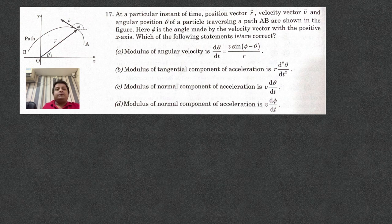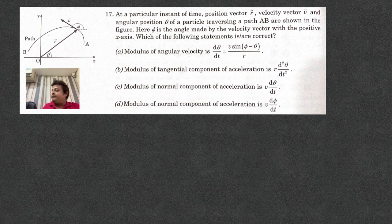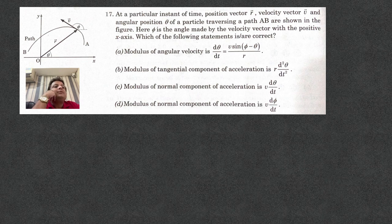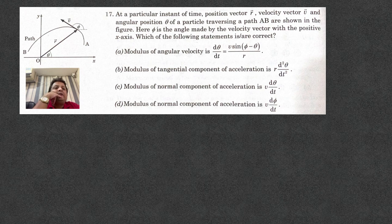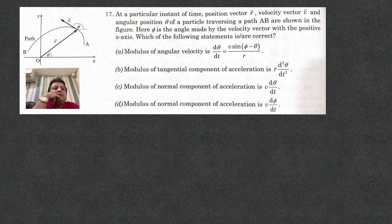It is this objective question, question number 17. So, it is given at a particular instant of time, position vector r, velocity vector v, angular position theta, traversing part a, b, phi is the angle made by the velocity vector with positive x-axis. Which of the following statements are correct?